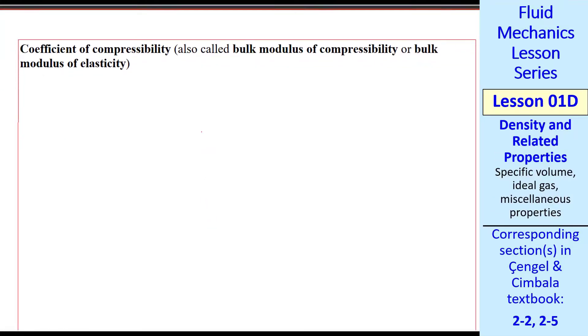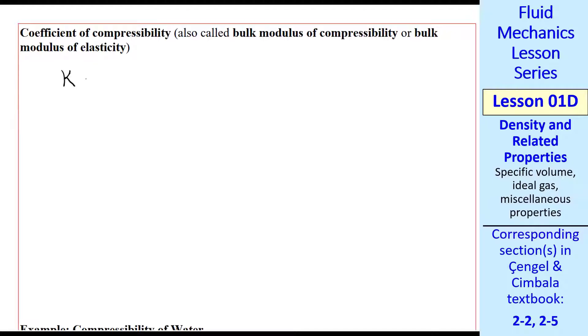This is for infinitesimal changes. The dimensions of kappa are force per unit area by this pressure. The densities cancel. So the dimensions are force per length squared. Typical units are pascals or sometimes atmospheres.